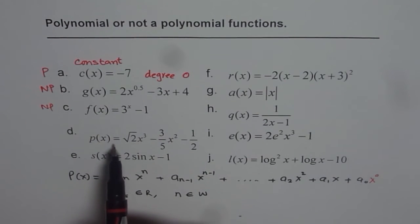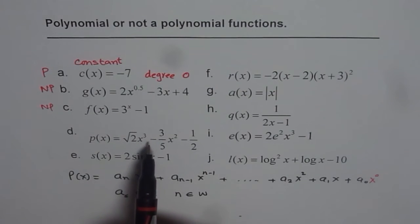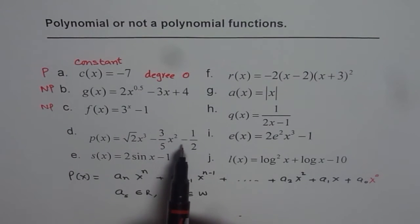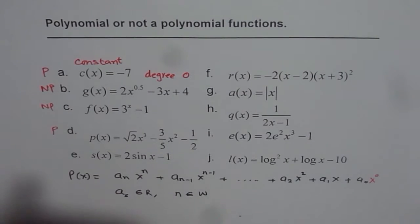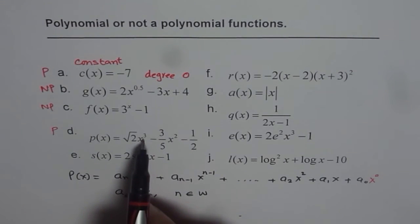D is P of x equals to square root of 2 x cubed minus 3 over 5 x squared minus half. All these coefficients are real numbers, and the exponents are whole numbers. Therefore, this is a polynomial. And this polynomial is of degree 3.